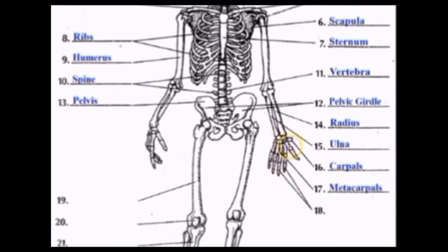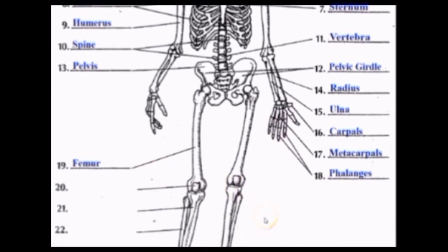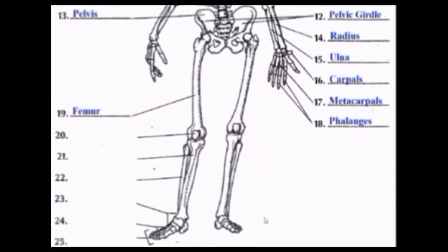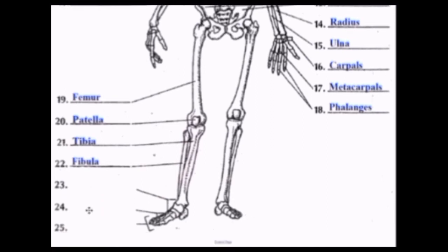The Metacarpals are the first set of bones leading up to your fingers, and the Phalanges are the finger bones themselves. Your thigh bone is called the Femur. Your kneecap is called the Patella. The big bone in your lower leg is the Tibia, and the smaller bone is the Fibula. Notice the connection between the hand and foot — the Carpals correspond to the Tarsals in the foot, which are the ankle bones. Then the Metatarsals are in the foot itself, leading to the toes, which are also called Phalanges.